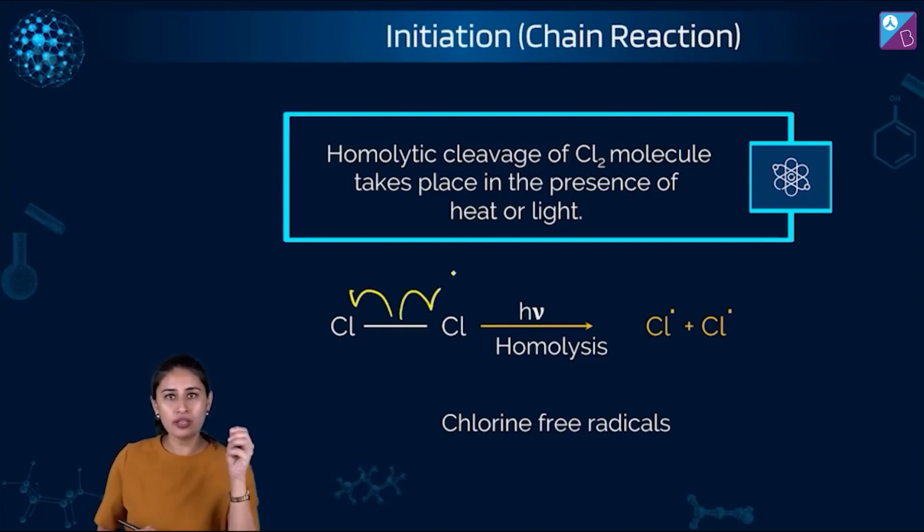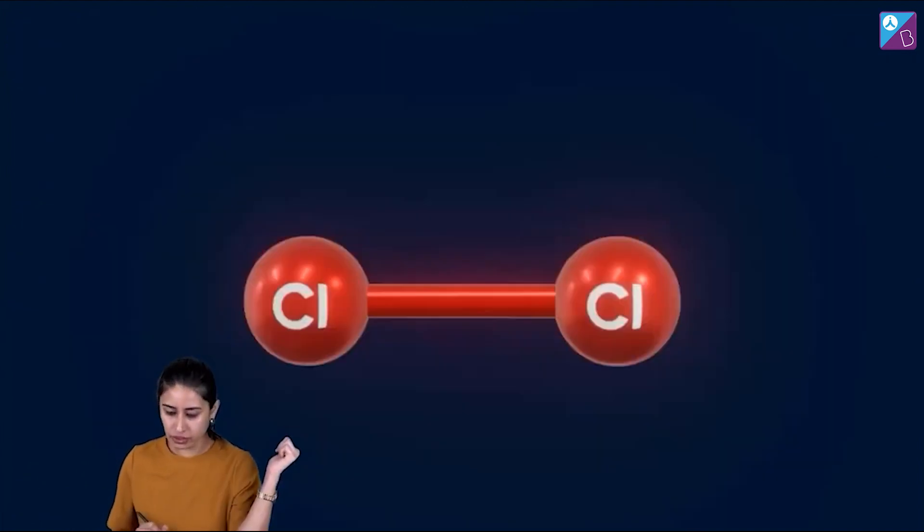Each of the atoms gets one electron on its head, which we call free radical. So we got chlorine free radicals. So homolytic cleavage of chlorine molecule takes place in the presence of heat or light.